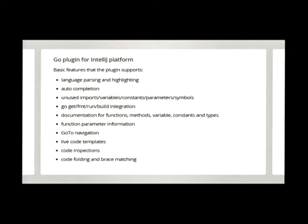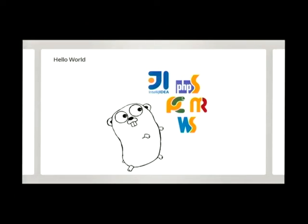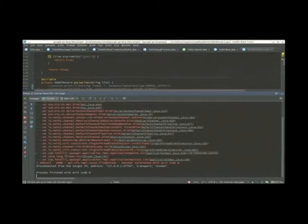About one year ago, the plugin was working-ish, let's say. But due to version upgrade, it broke. So that's when I started working on it. And since then, the basic features of the plugin that are currently sort of working most of the time are language parsing and highlighting, auto-completion, import variable, unused variable and parameters detection. It has GoGet integration as well as GoFmt, GoBuild, GoRun.